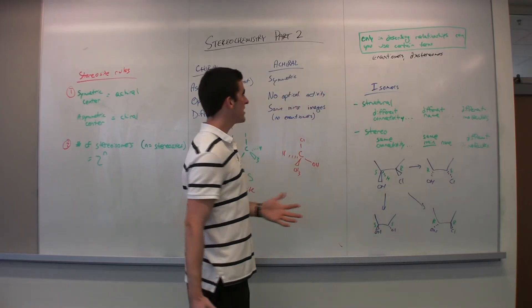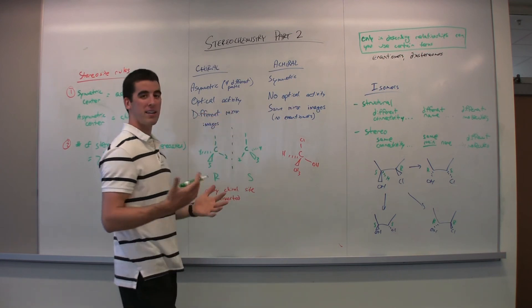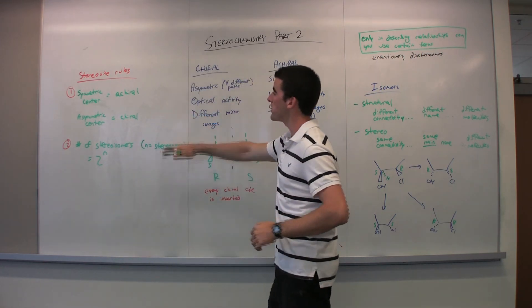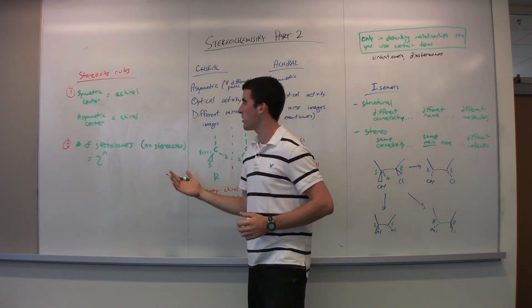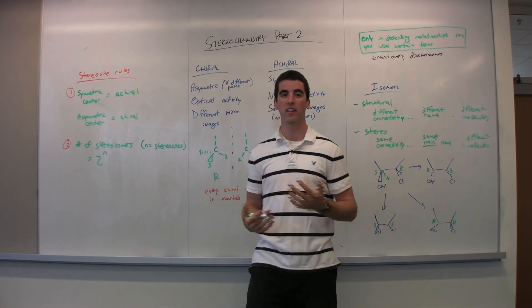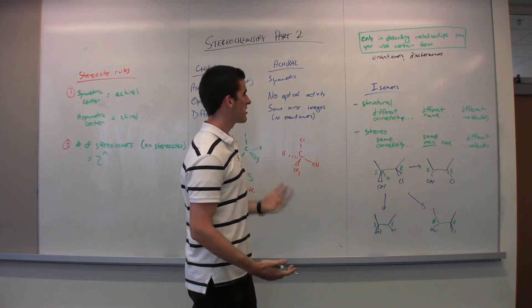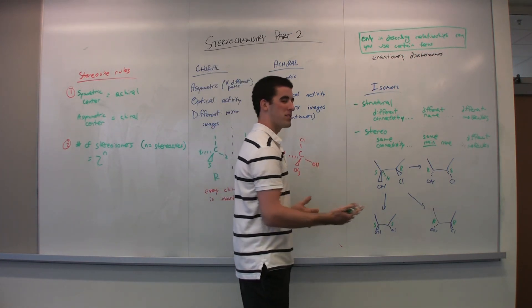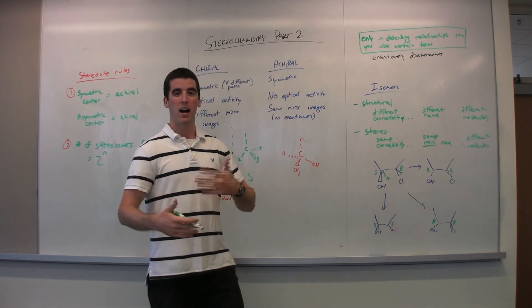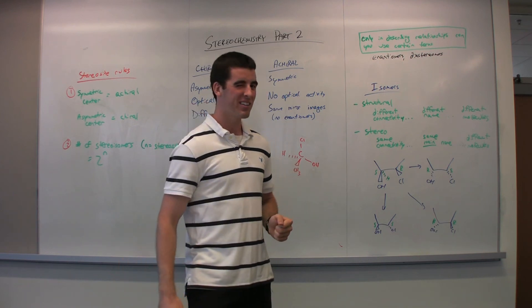All right. So with stereochemistry here, we have rules of chirality. So keep that in mind, what actually designates if it's going to be a chiral or achiral site. We also have certain stereosite rules here, such that the symmetric center is achiral, asymmetric center is chiral. And again, that 2 to the N rule there to find the total number of stereoisomers. And again, just the contrast between structural and stereoisomers and the relationship between enantiomers and diastereomers. That's the basic overview of stereochemistry. I hope you enjoyed both parts. And I love Orgo and you can too. Thank you for tuning in.